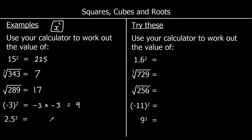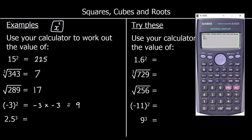Finally, 2.5 cubed. Find the x³ button on the calculator — if you can't find it, there's an x with a power button where you can type any power. 2.5 cubed gives a fraction of 125 over 8, but if you want a decimal, press the S to D button and you'll get 15.625.